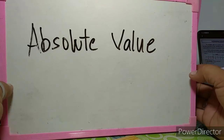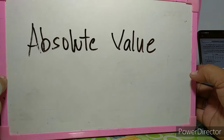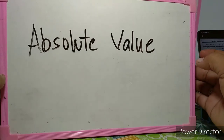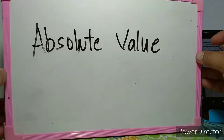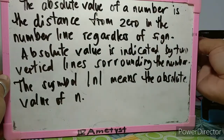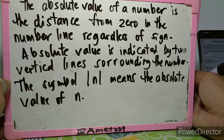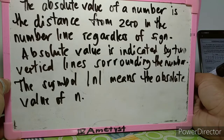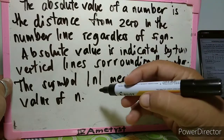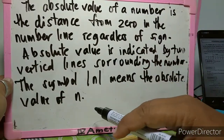Today we're going to discuss the absolute value of a number. The absolute value of a number is the distance from zero on the number line, regardless of sign. Absolute value is indicated by two vertical lines surrounding the number — this symbol means the absolute value of n.